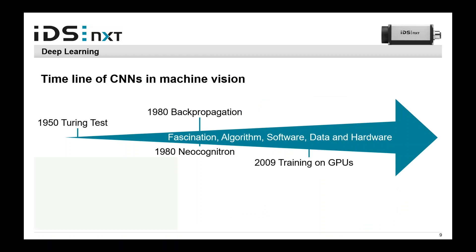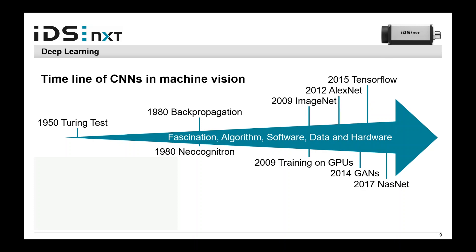There were then methods for training images and enhancing neural networks, but deep learning remained in the area of science. This changed rapidly around 2009 because new hardware became available. We could now train networks on GPUs, which dramatically changed the usage of neural networks — we now had the ability to train our networks far faster than with classical CPUs. Since 2009, a lot of freely available image data has existed. ImageNet, for example, opened in 2009 as a collection of freely usable images — also not available before.